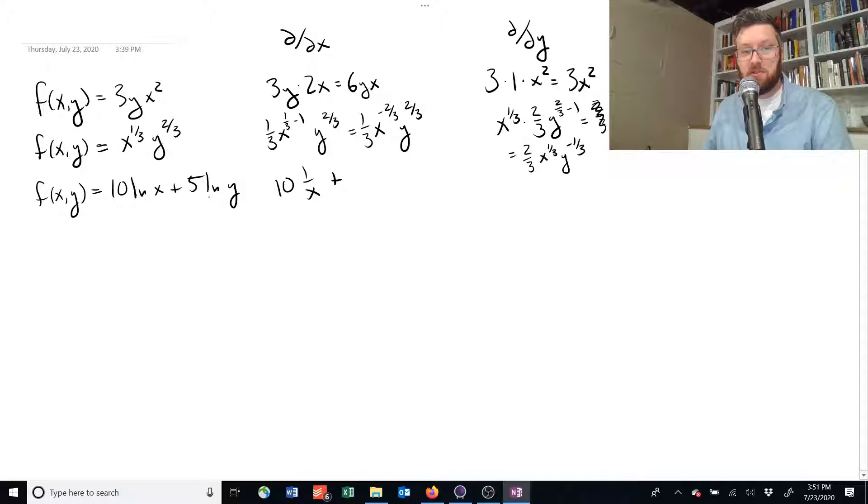And in the second term, well, there's no x here, so there's no effect of this term on what happens to the answer when we change x. So we'll just write 0. And we've done it.